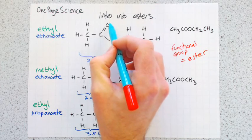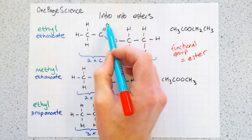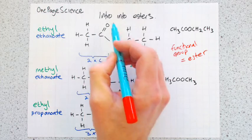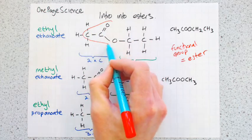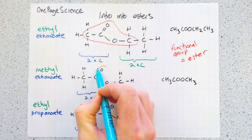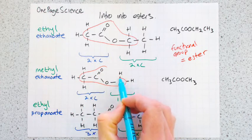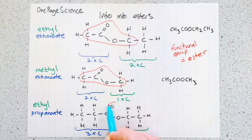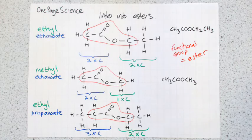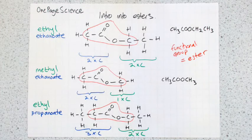The functional group this time is called an ester. And in these molecules, it's the carbon double bond to the oxygen, single bond to another oxygen, but on both sides attached to a carbon. So it's essentially that bit there in that molecule, that bit there in that molecule, and that bit there in that molecule.